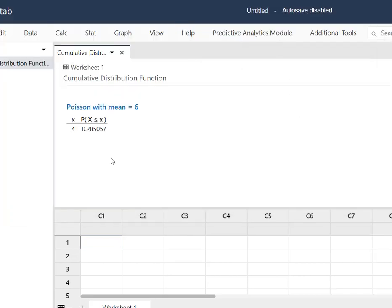And it tells me that the probability of four or fewer burned out bulbs is 28.51% rounded using the cumulative distribution function.